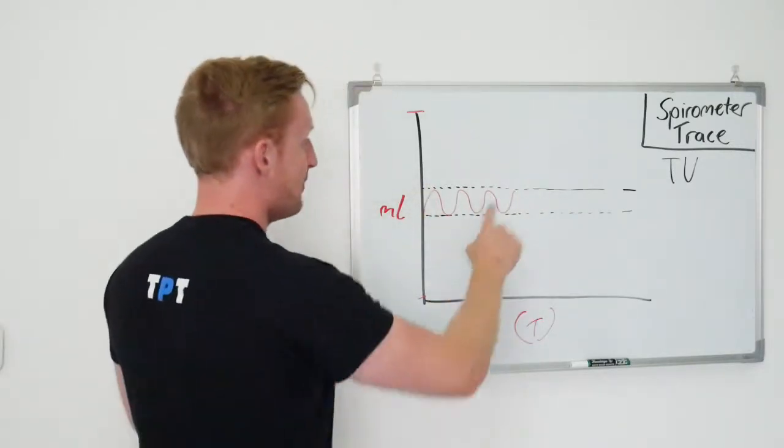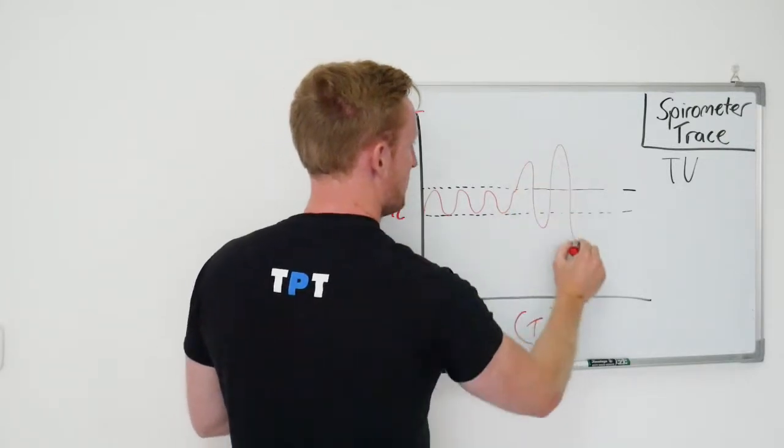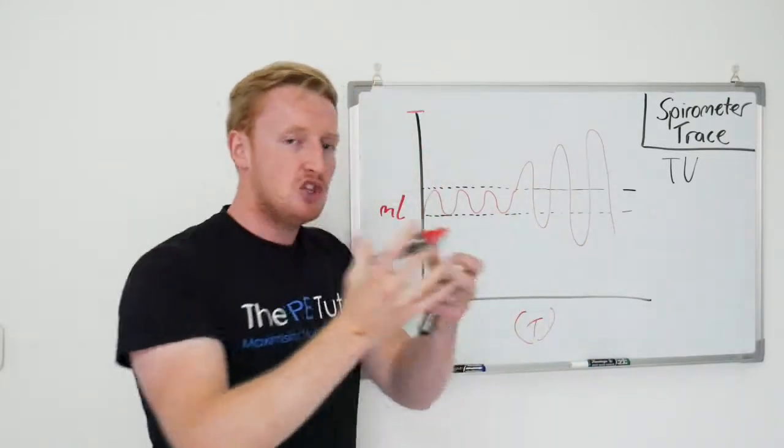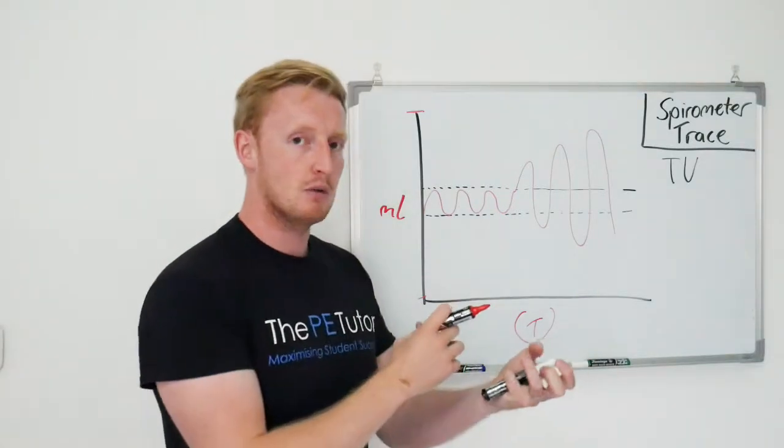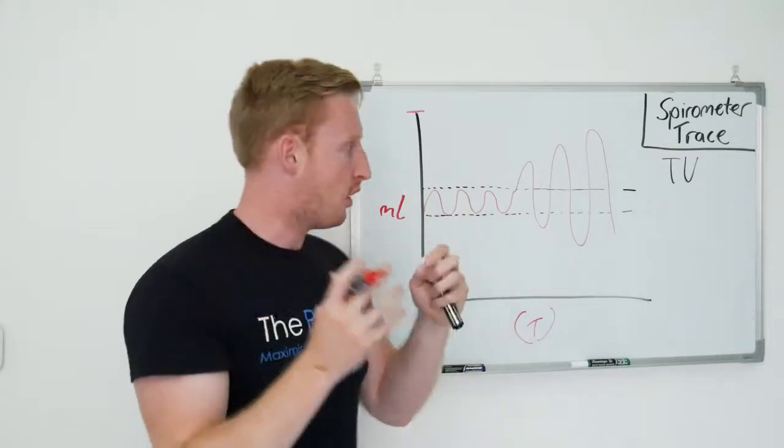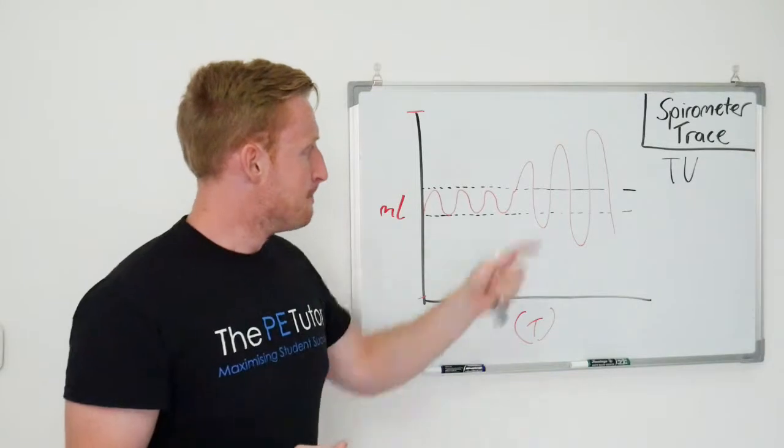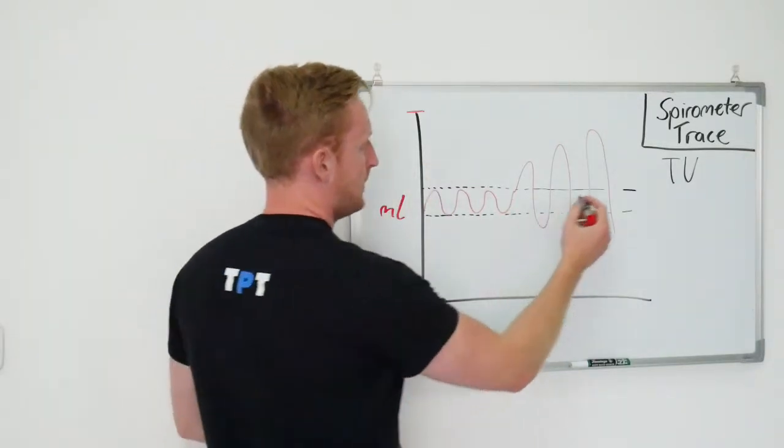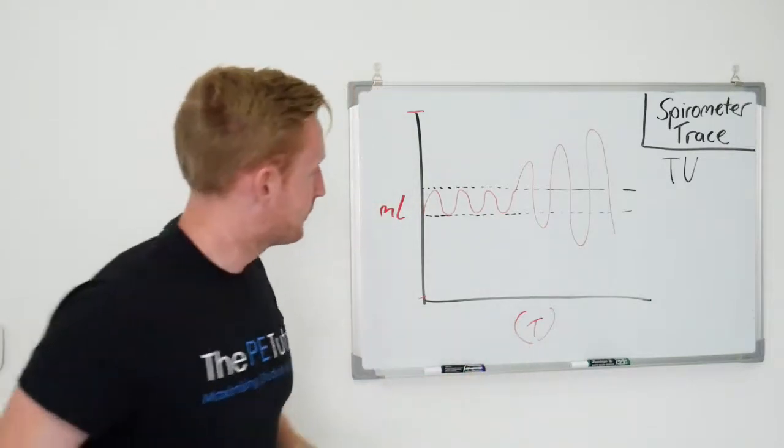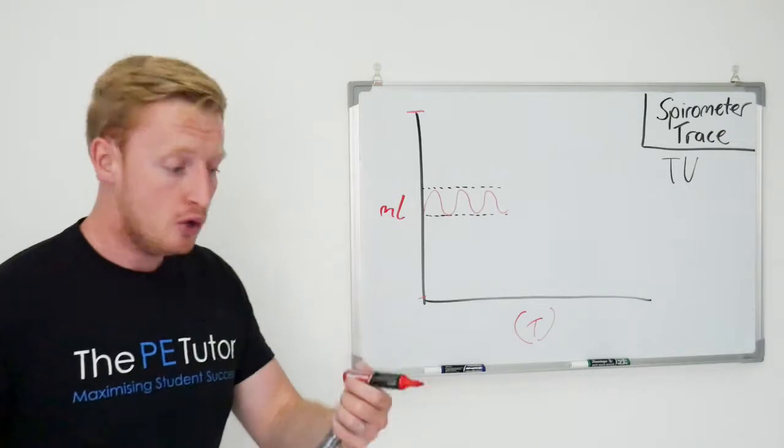Now when you start to exercise, this line is going to start to increase because you have more energy demands in your body, more O2 demands around your body, and a buildup of CO2. So your brain responds by making you breathe quicker, deeper, so you increase your minute ventilation. Now if you reach a plateau, then you can refer to the plateau as your new tidal volume.